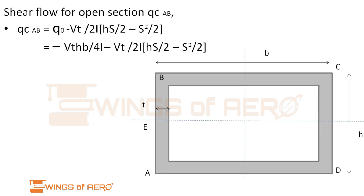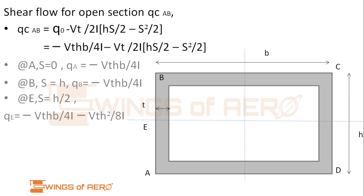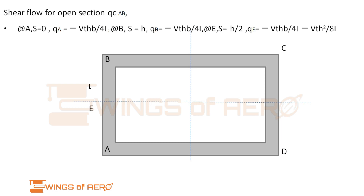Now applying q0 = −VtHB/(4I) to the q_closed(AB) equation and evaluating at points A, B, and E: at point A we get VtHB/(4I); at point B we get −VtHB/(4I) — both have the same magnitude; at point E we have an additional term Vt H²/(8I), which represents a parabolic distribution. We can draw the shear flow distribution along AB as shown in the figure.